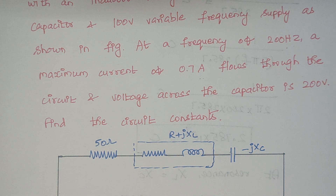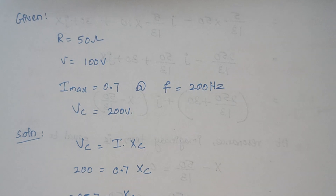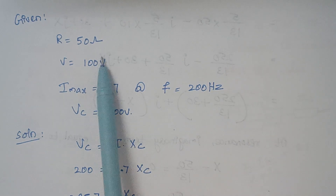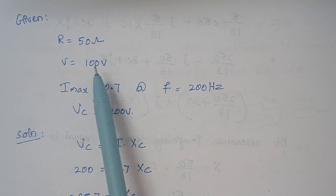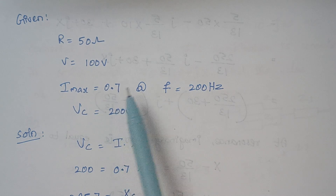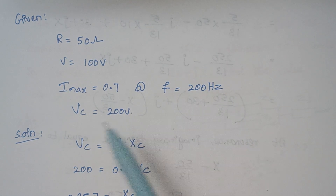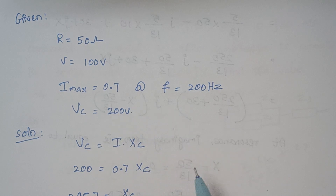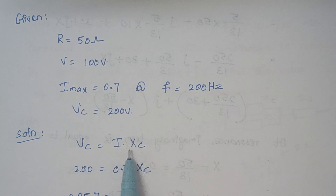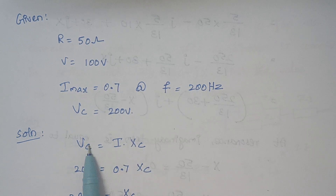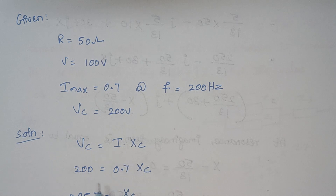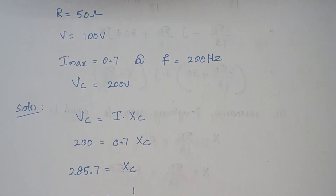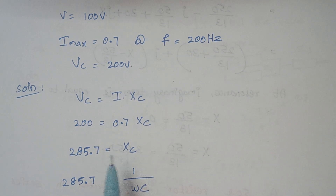Write down the given data: R = 50 ohms, source voltage V = 100 V, I_max = 0.7 A, frequency = 200 Hz, and Vc = 200 V. Since Vc = I times Xc, and we know both voltage and current, we can easily calculate the value of Xc. Xc = Vc / I = 200 / 0.7 = 285.7 ohms.